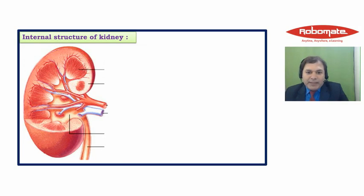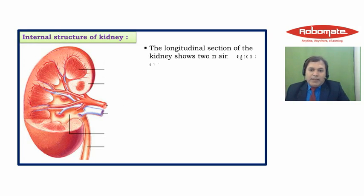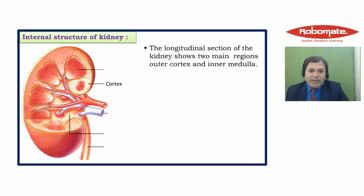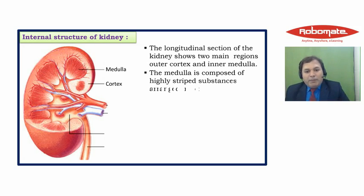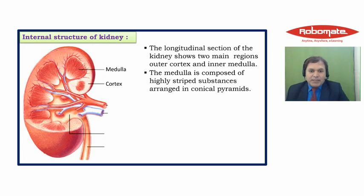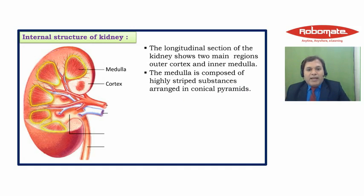Now let us study the internal structure of the kidney. A longitudinal section of the kidney shows two main regions: the outer region called the cortex, and the inner region called the medulla. The medulla is composed of highly striped substances arranged in conical pyramids — you can see the triangular structures with striations, which are the conical pyramids.